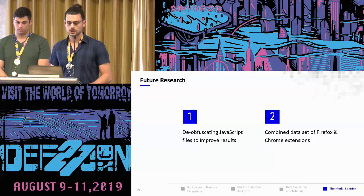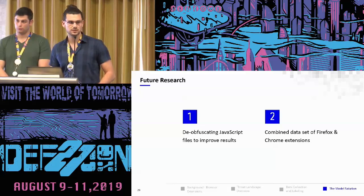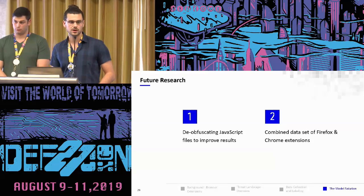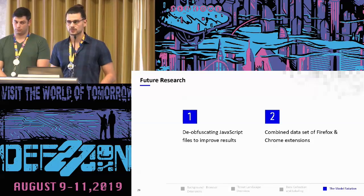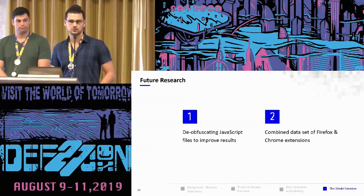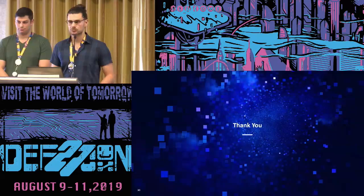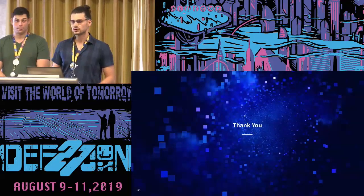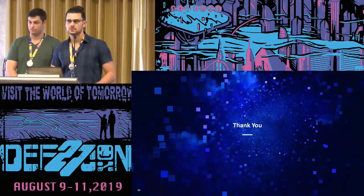For future research, we would like to deobfuscate the JavaScript files before extracting features, since the extension threat landscape has a lot of obfuscated JavaScript code — so we want to do normalization and deobfuscation first. Another thing to try is combining the dataset to train a model on both Chrome and Firefox extensions together, since the formats and files are similar, though we haven't yet tested results on a Firefox dataset. And that's pretty much it. Thank you very much.